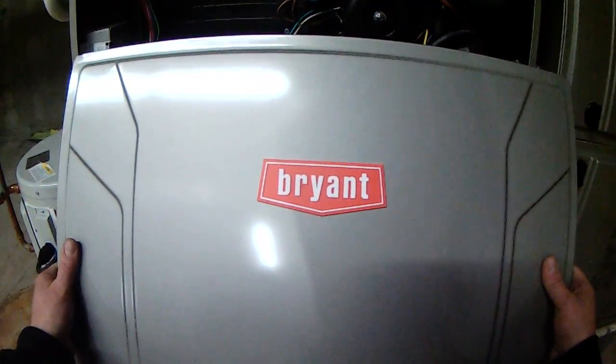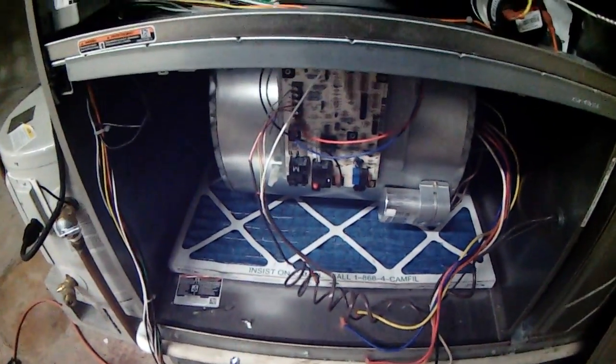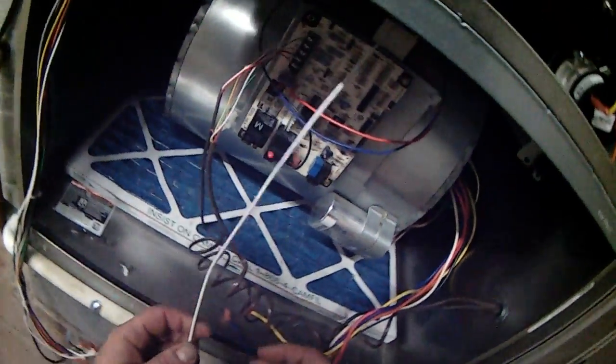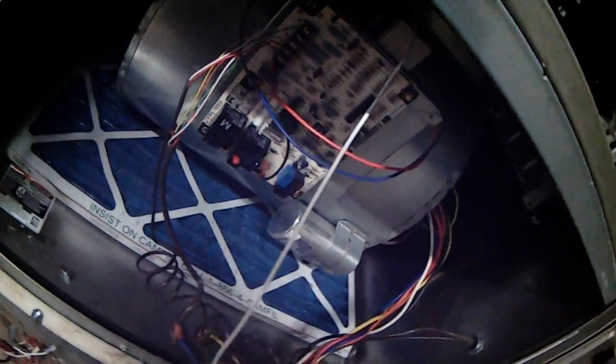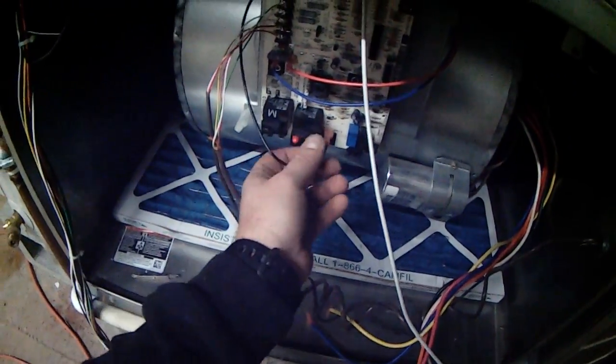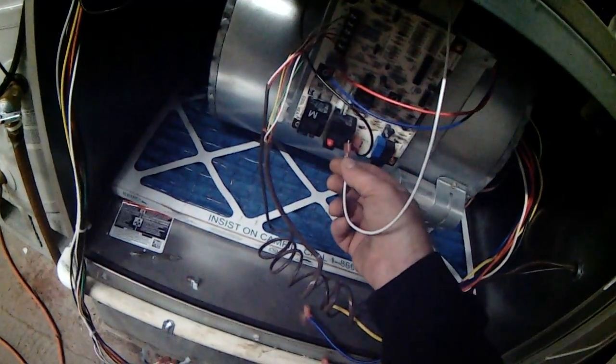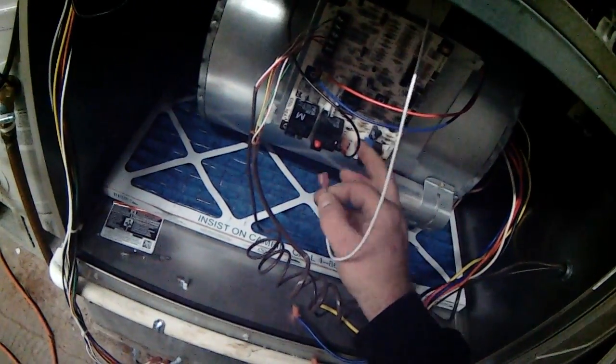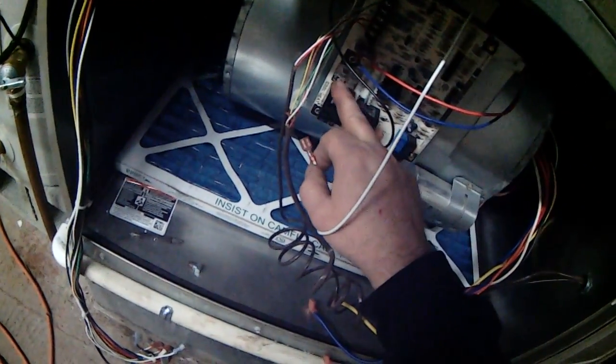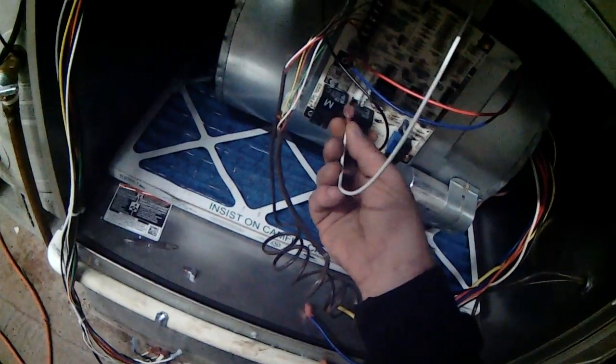We're dealing with a Bryant unit. The first wire we see here dangling is the neutral that comes off the transformer. Here is the hot wire that goes to the transformer. Here are your neutral terminals right here—there's five of them. We're going to take this one and connect it over here on one of the neutral tabs.